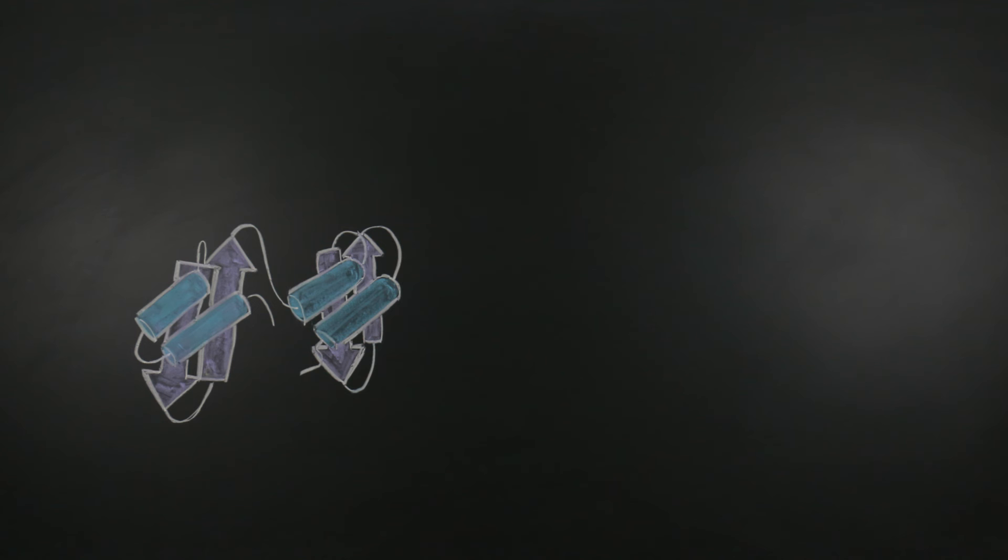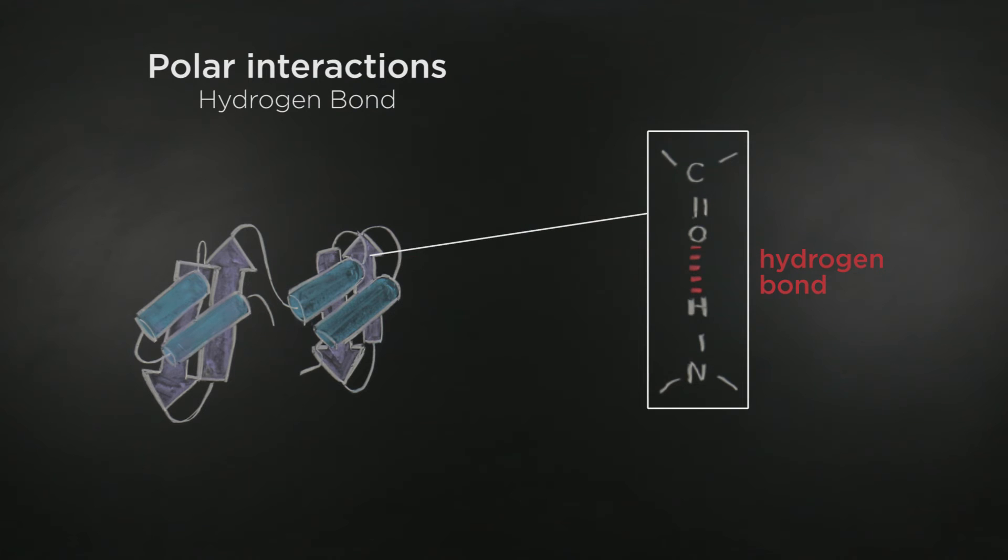Non-covalent interactions between two polar molecules are weaker. One important example of such an interaction is the hydrogen bond. Hydrogen bonds are formed between an electronegative atom like oxygen and a hydrogen atom that is covalently linked to another electronegative atom. Such bonds between the polypeptide backbone groups are critical in forming secondary structures in proteins.